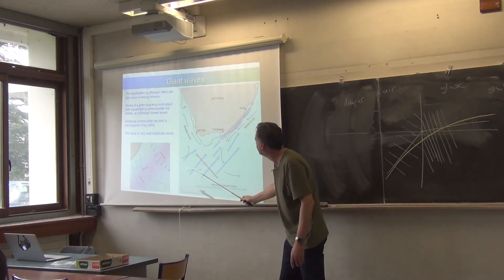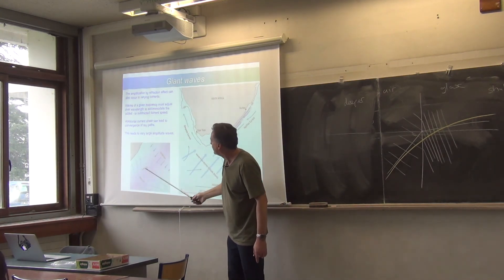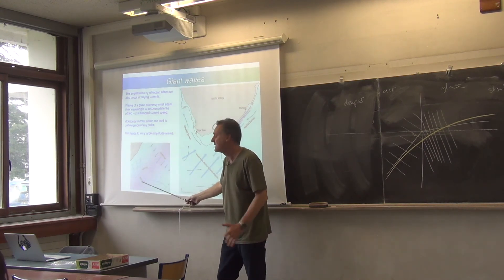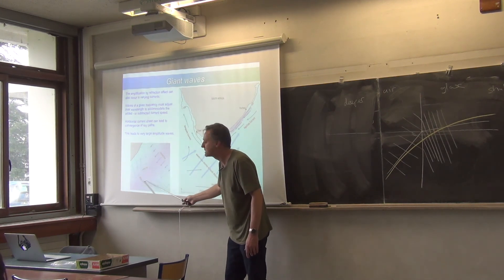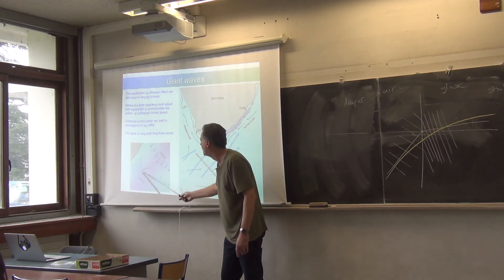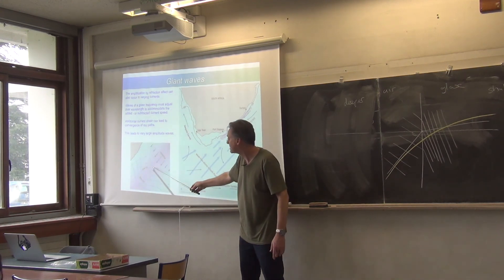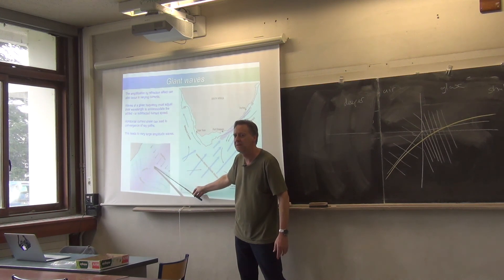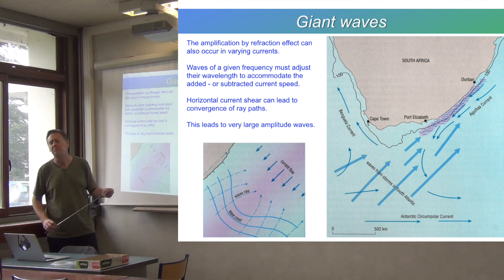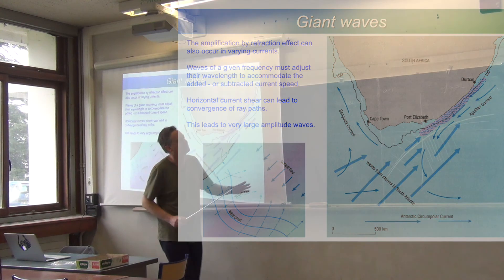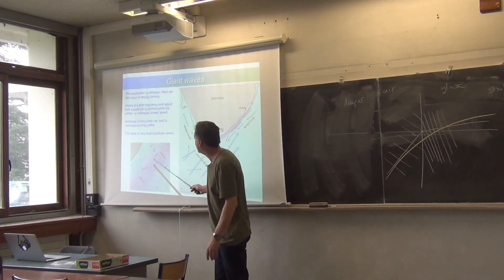And so if you have a wave field coming towards a current, and if this current is intensified in the middle, then the waves will be slowed down because they're propagating against the current. So effectively their wavelength will shorten. All right. And they'll shorten most in the center of the current. This will cause the rays to converge, and then again, because of this conservation of energy principle, you'll have big waves here where the rays have converged, right? So that's a situation where you can get very big waves, and it's not because of this effect of shallowing water. It's because of relative speed of the waves against the current flow.